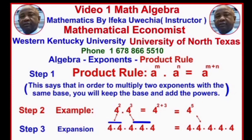Let us go to step number two as an example. 4 raised to the power 2 times 4 raised to the power 3 is equal to 4 raised to the power 2 plus 3, which is equal to 4 raised to the power 5.